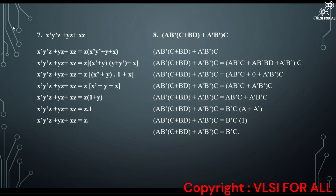Next question: AB̄(C plus BD) plus ĀB̄C. Using the distributive law: AB̄C plus AB̄BD plus ĀB̄C. Since B · B̄ = 0, we get AB̄C plus 0 plus ĀB̄C = AB̄C plus ĀB̄C. Taking B̄C as common: B̄C(A plus Ā). Since A plus Ā = 1, our answer is B̄C. This is our reduced function.